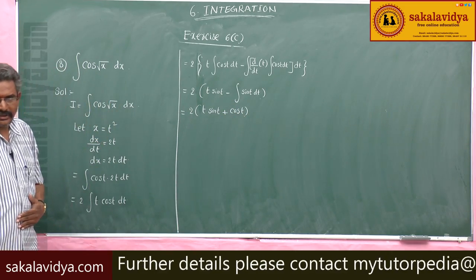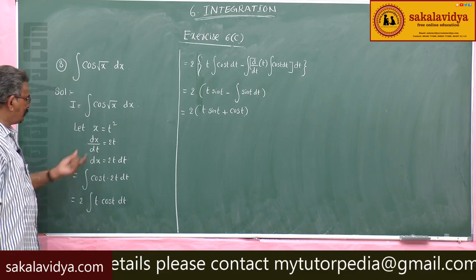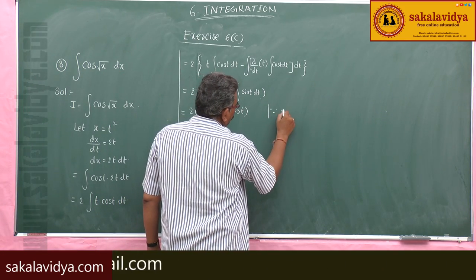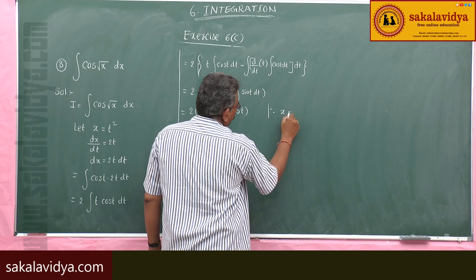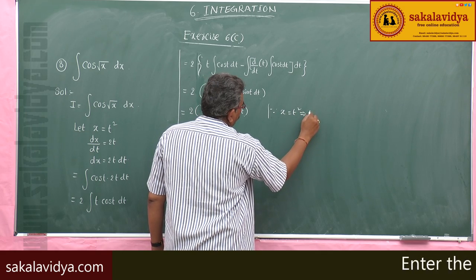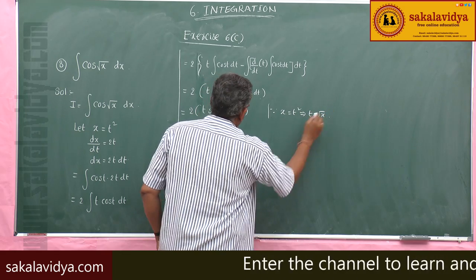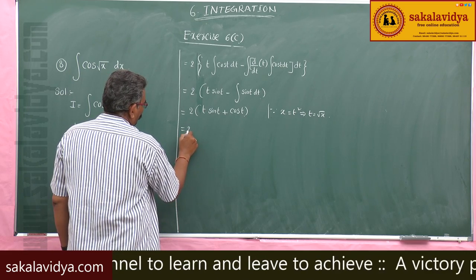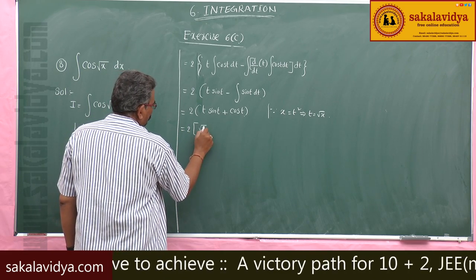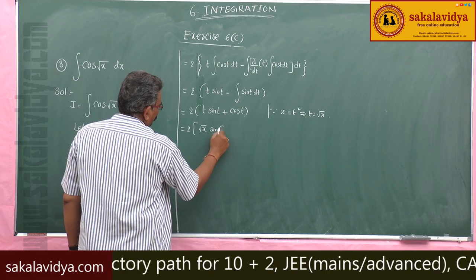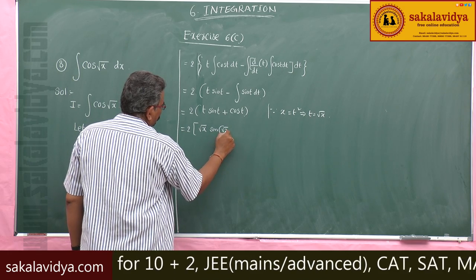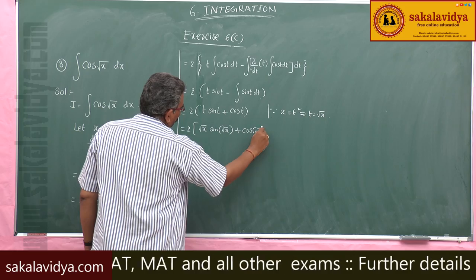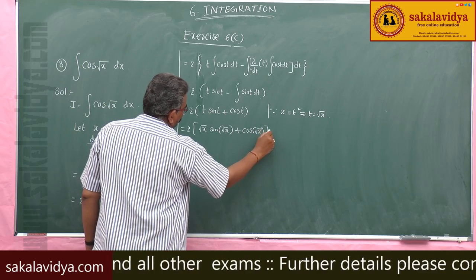Now, what is t here? Since x = t², t = √x. Substituting back: 2[√x · sin(√x) + cos(√x)] + constant of integration.